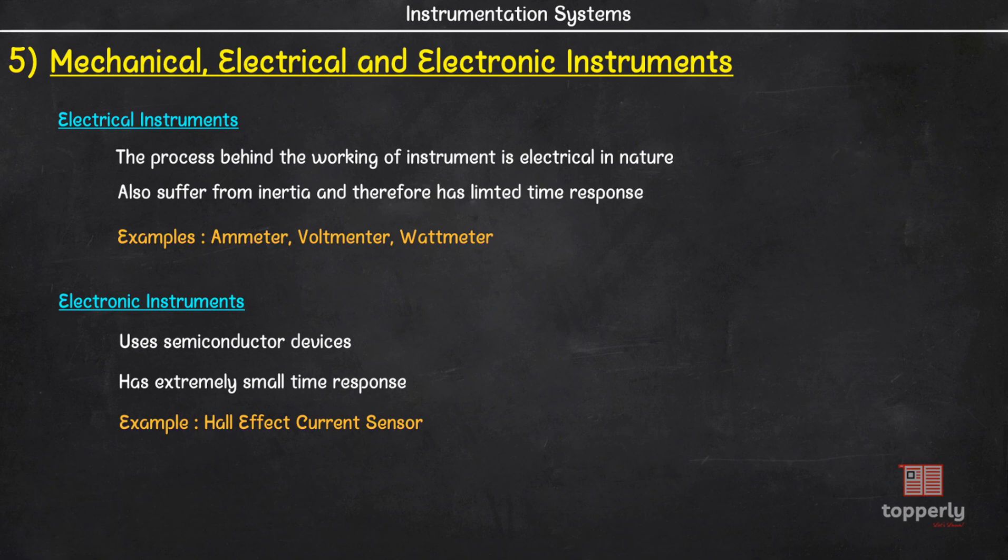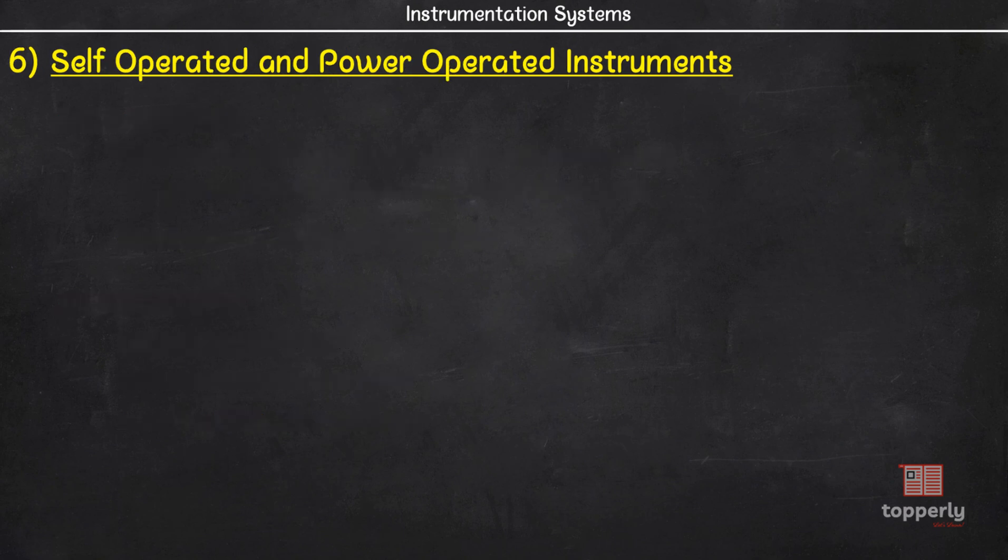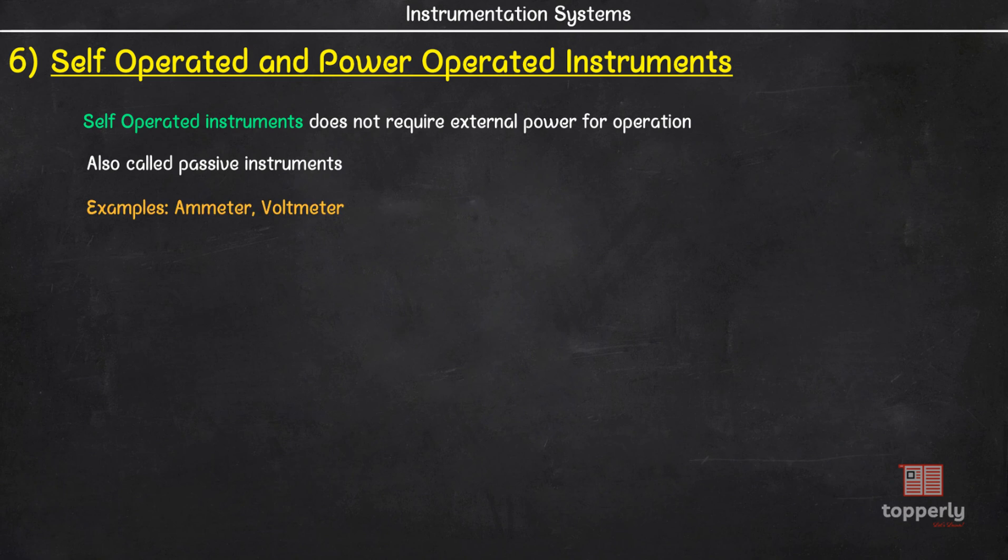The next classification of instruments is based on their power usage. We have self-operated and power-operated instruments. Self-operated are those which require no outside power for operation. It draws power from the measuring environment. They are also called passive instruments. For example, in ammeters and voltmeters, the meters take power from the system under measurement.